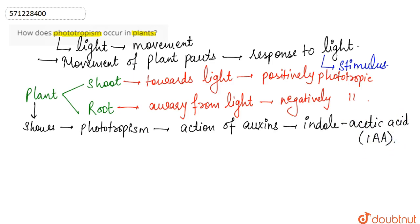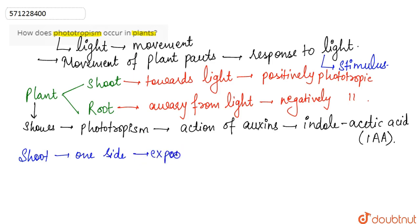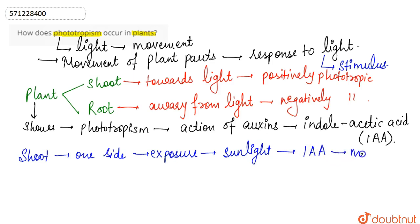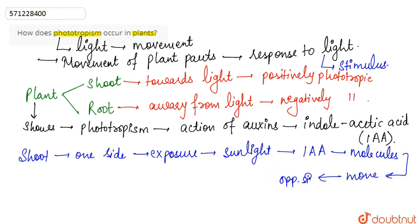When one side of the shoot is exposed to sunlight, the molecules of IAA — indoleacetic acid — move towards the opposite side, which is the shaded side of the plant, the side that is not under exposure to sunlight.